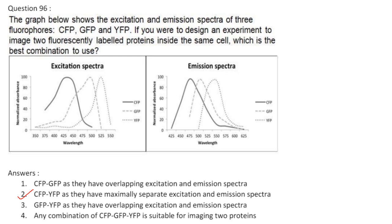The excitation and emission spectra of three fluorophores — CFP, GFP, and YFP — are shown. To image two fluorescently labelled proteins inside the same cell, the best combination is CFP and YFP, as they have maximally separate excitation and emission spectra. The excitation spectra of CFP and YFP are maximally separate, and the emission spectra are also maximally separate — one starting around 425 nm and the other around 500 nm. Answer is option 2.